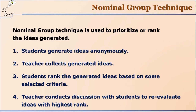The teacher conducts a discussion with students to re-evaluate ideas with the highest rank. With 40 students in a class split into groups of 5 or 6, you may have 7 to 8 groups. Once everyone has given their ranks, you can have a class-wide discussion with all 7–8 groups to re-evaluate the ideas, so that the top 2 or 3 ideas can be selected for actual action.